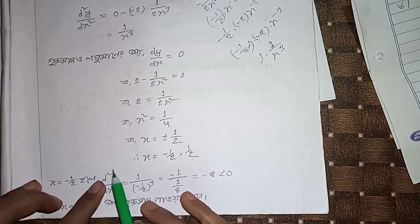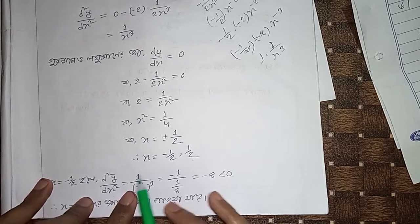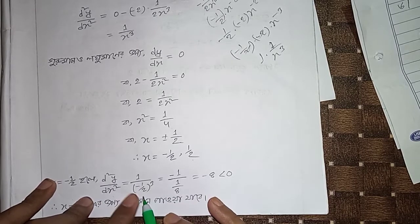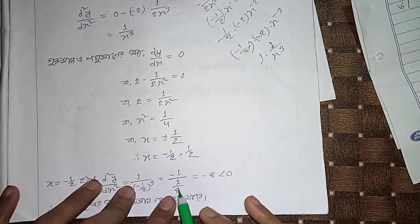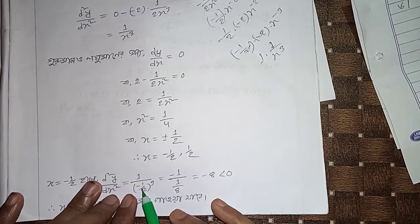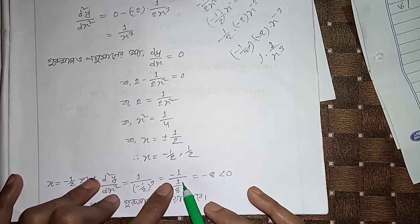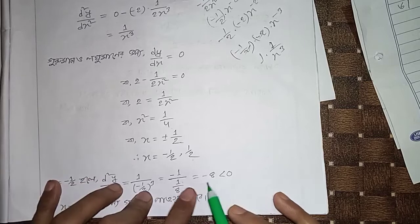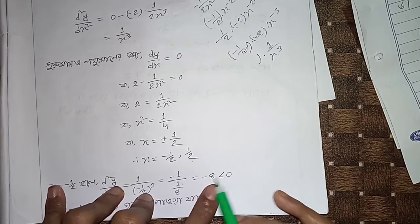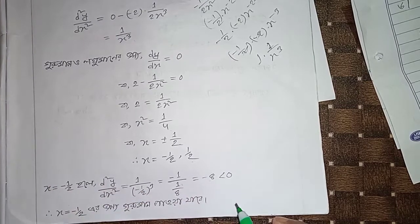At x equals minus half, d²y/dx² equals minus 1/(2·(-1/2)²) equals minus 2/(-1/4) equals minus eight. Since this is less than zero, x equals minus half is a maximum.